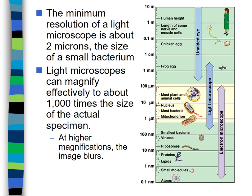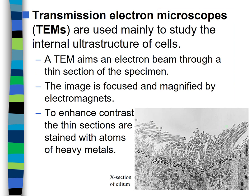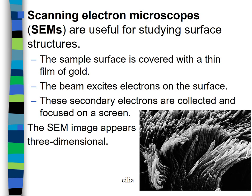We also have the electron microscope, which uses electron beams instead of light wavelengths and can see much smaller objects. There are two types: the transmission electron microscope, used to look at the internal structure of a cell, and the scanning electron microscope, which looks at the surface of an object. There are fantastic scanning electron microscope images online, especially of insects.